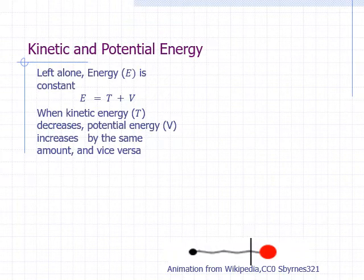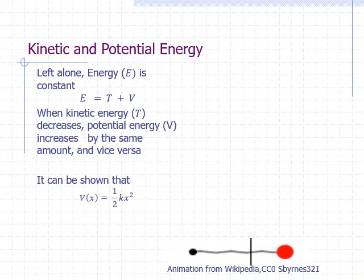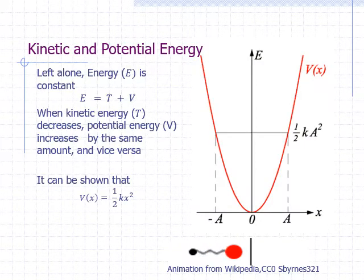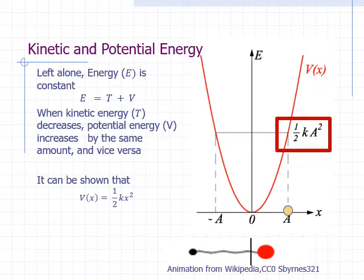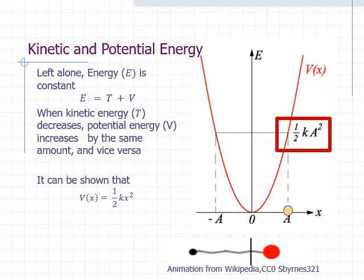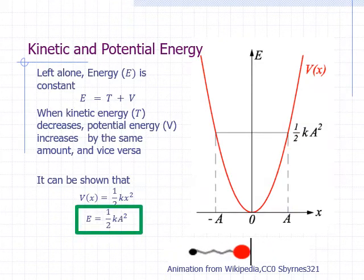For a harmonic oscillator, the potential energy can be shown to be equal to one-half k x squared plus a constant. There is no absolute scale for potential energy, so as a matter of convenience, we take that constant as zero. Here's a plot of potential energy versus location. We have an oscillator whose turning points are x equals a and x equals negative a. Substituting a for x in the potential energy expression gives one-half k a squared. At the turning point, the velocity is zero and so is the kinetic energy. Therefore, the total energy at the turning point is just one-half k a squared, and since total energy is constant, this is the total energy everywhere.